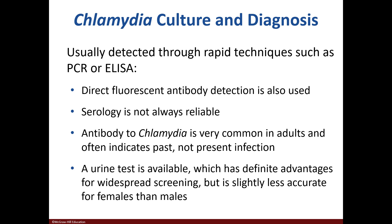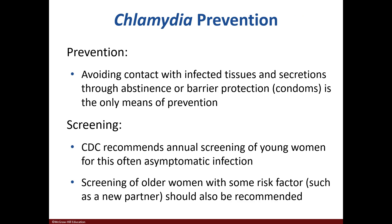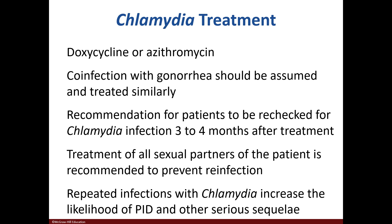Diagnosis can be made using PCR, analyzer, or direct fluorescent antibody detection. Urine tests are also available but are not as accurate in women. Prevention, as with all STIs, is with the use of protection. The CDC recommends annual screening of young women. Treatment is with doxycycline or azithromycin, and all sexual partners should be treated.